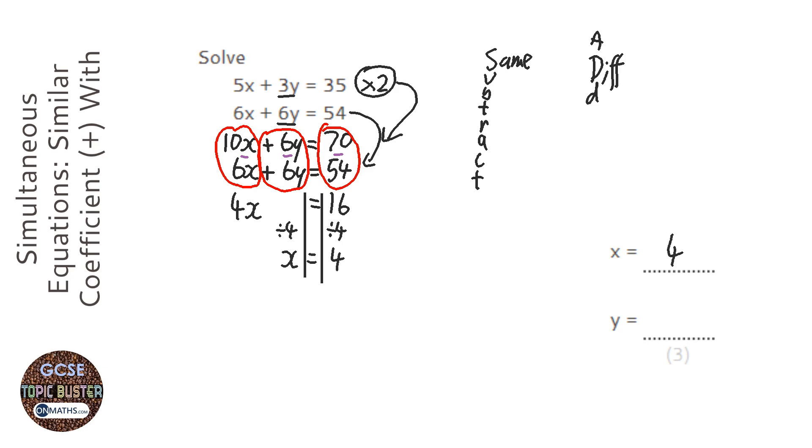Now that's only half of the question done, because we need to find out what y is. I'm just going to substitute that value of x into the first equation, and you can choose either. So 5 times 4 plus 3y equals 35.